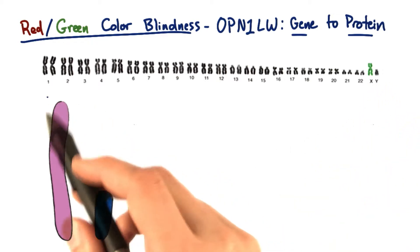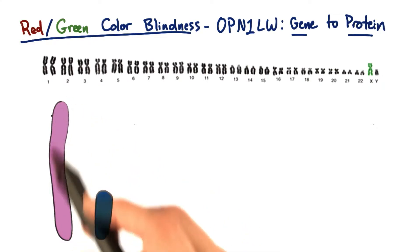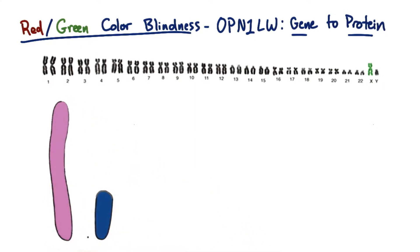Here's a zoomed-in pair of the sex chromosomes, where the X chromosome is apart in an individual that's XY. Remember, the Y chromosome is much shorter than the X.